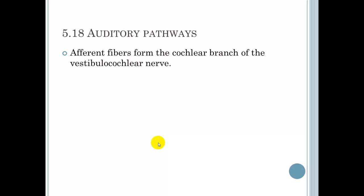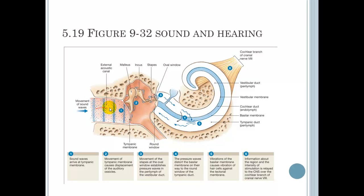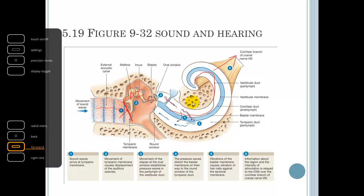5.18 auditory pathways. Afferent fibers form the cochlear branch of the vestibulocochlear nerve. This is a quick overview of this. So sound wave enters into the external acoustic canal, bumps up against the tympanic membrane, vibrates the malleus, incus and stapes. This transfers it to the oval window, which will give us pressure waves in this fluid, which then is perceived by the cochlea, and the information is transferred to the cochlear branch of the eighth cranial nerve, and put away in our brains.